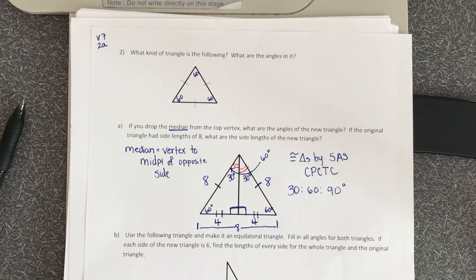So now I know two sides of my right triangle, so using my Pythagorean theorem, I can find the length of the median.